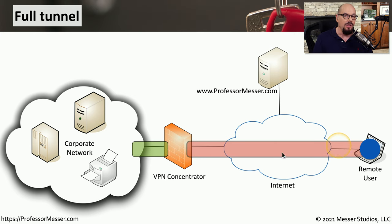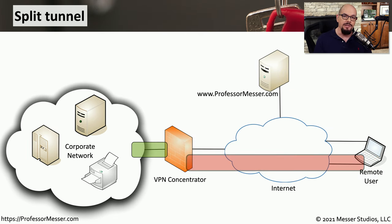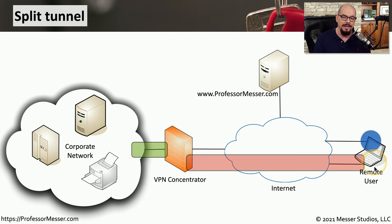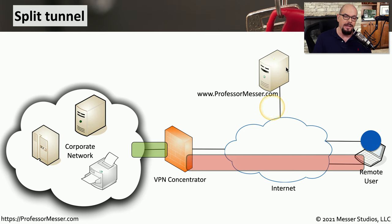This means that in a full tunnel, all of the data is going across that encrypted tunnel, and the user can't break out of that tunnel to send information to another device directly. With a split tunnel, the administrator can configure some information to go through the tunnel and other information to go outside of it. For example, a remote user can still communicate to the remote network through the VPN concentrator, but if they need to communicate to a separate website, they can do so directly without going through the full tunnel.